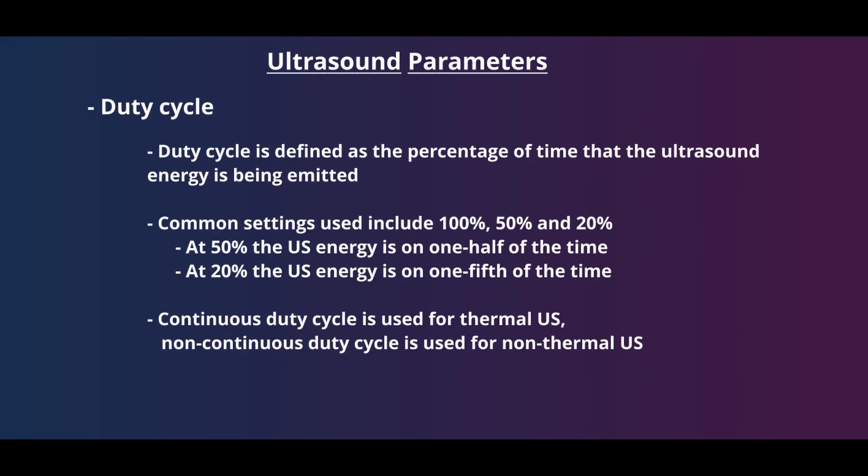Our next parameter is duty cycle, defined as the percentage of time that the ultrasound transducer is emitting energy. The duty cycle can range from 100% — a continuous ultrasound where it is always on — to 0% where ultrasound is off. Most units will have a few presets you can adjust. Using a lower duty cycle setting is a way to decrease the amount of energy being transmitted to the patient. As a general rule, continuous duty cycles of 100% are used for thermal ultrasound, while settings below that are used for non-thermal.